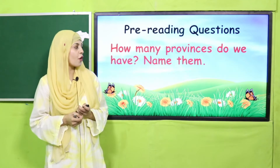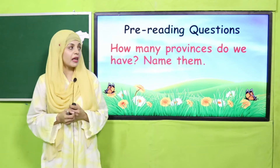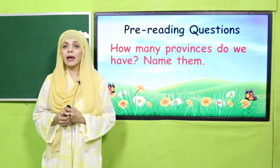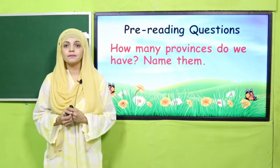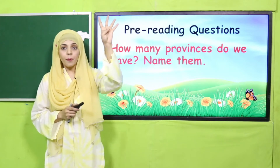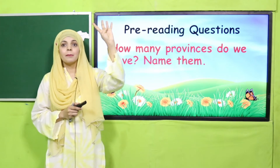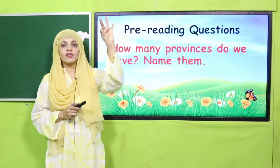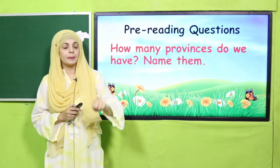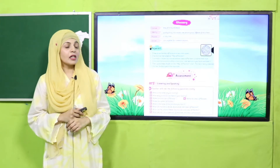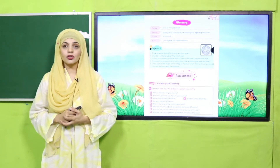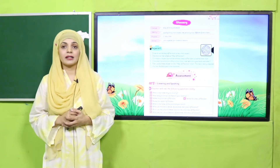From here we will move towards the pre-reading question: how many provinces do we have? Name them quickly. We have four provinces: Punjab, Sindh, Khyber Pakhtunkhwa, and Balochistan. Now quickly open page number 11 in your books, as we will start our project.